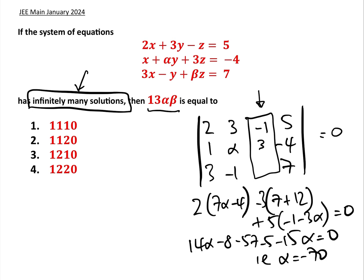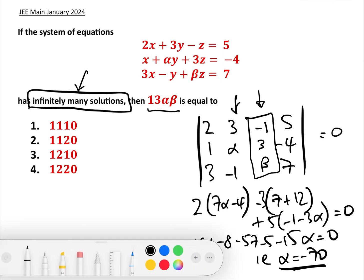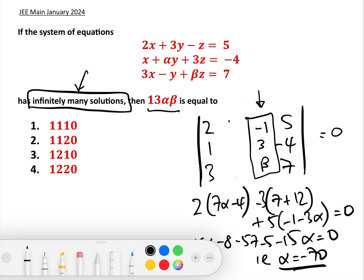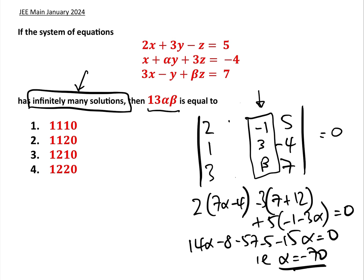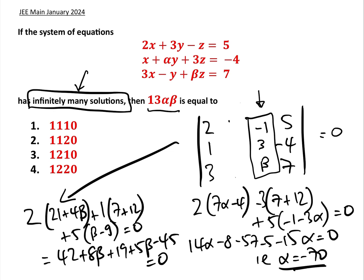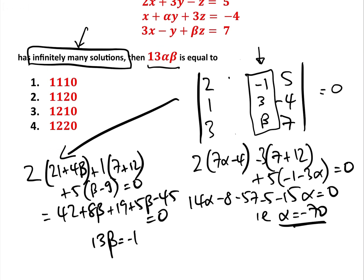Now let's put the β column back: −1, 3, β. We know α but we're not going to use it yet. Instead, we hide the α column and evaluate that new 3×3 determinant to find β. Expanding: 2(21 + 4β) + 1(7 + 12) + 5(β − 9) = 0, giving 42 + 8β + 19 + 5β − 45 = 0, i.e. 13β = −16, so β = −16/13.